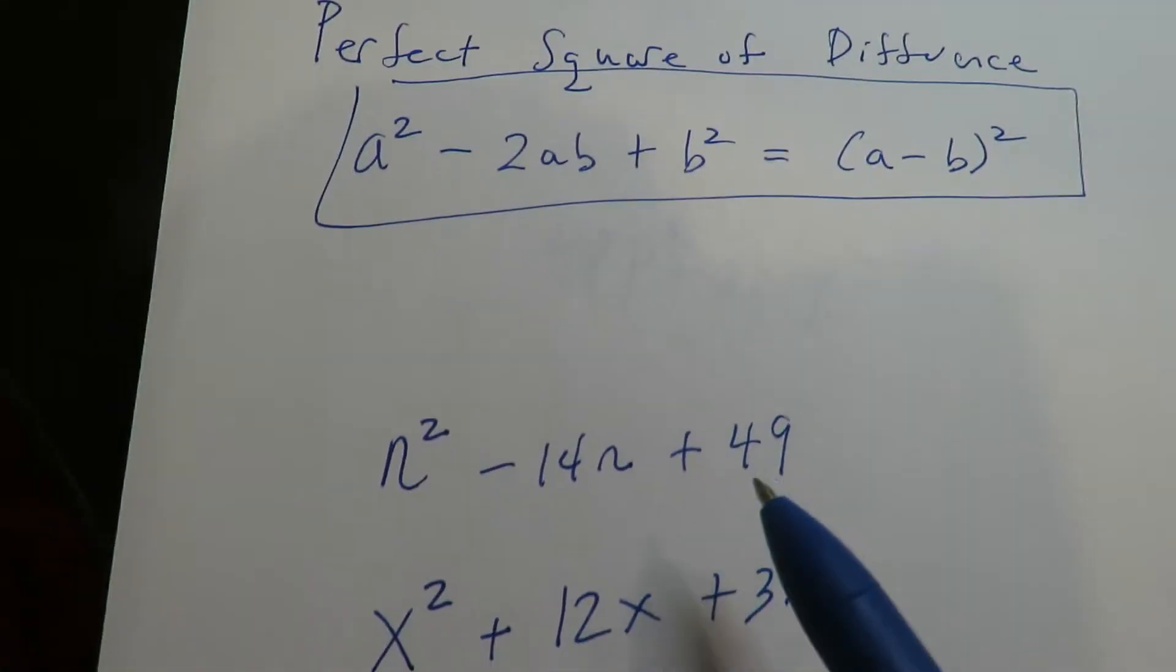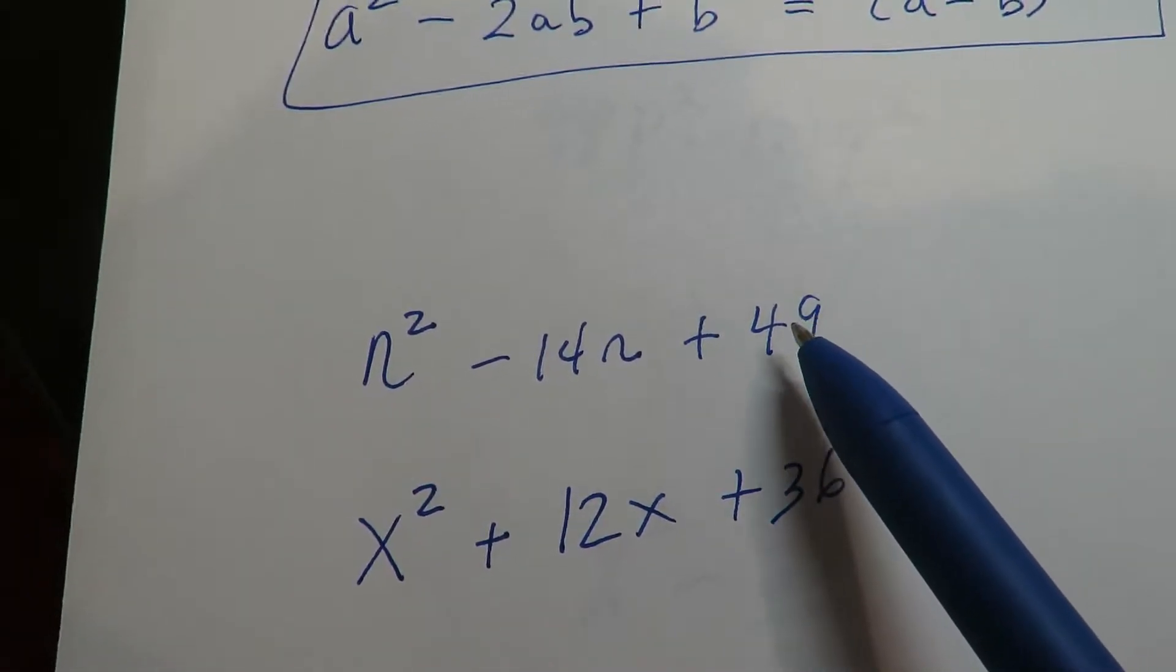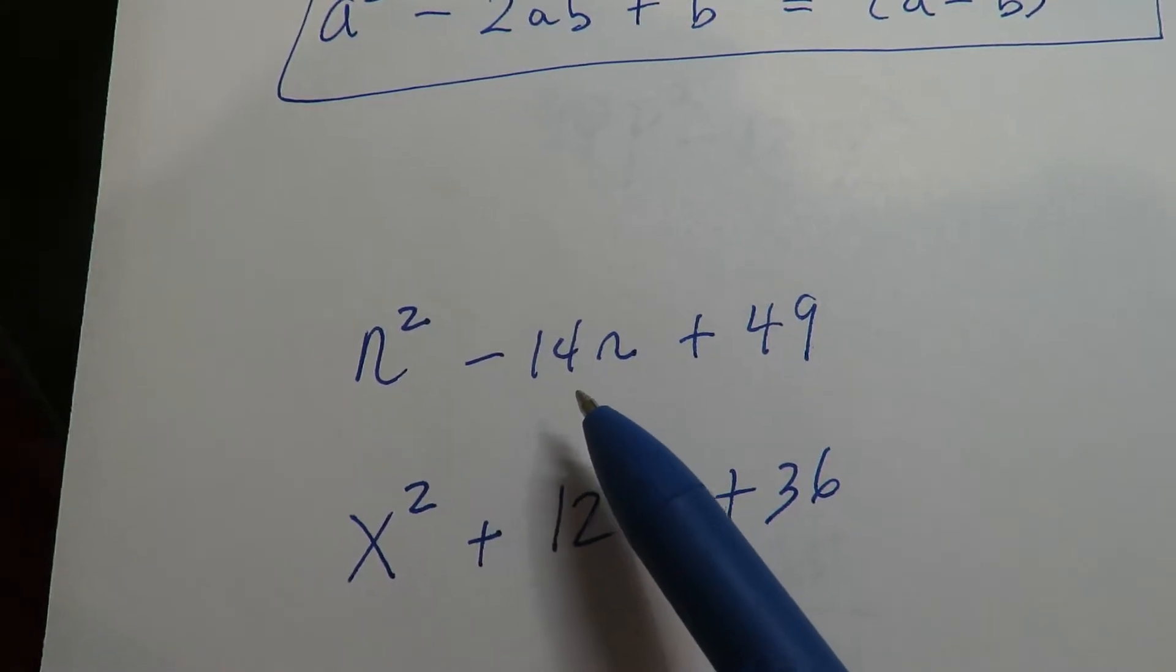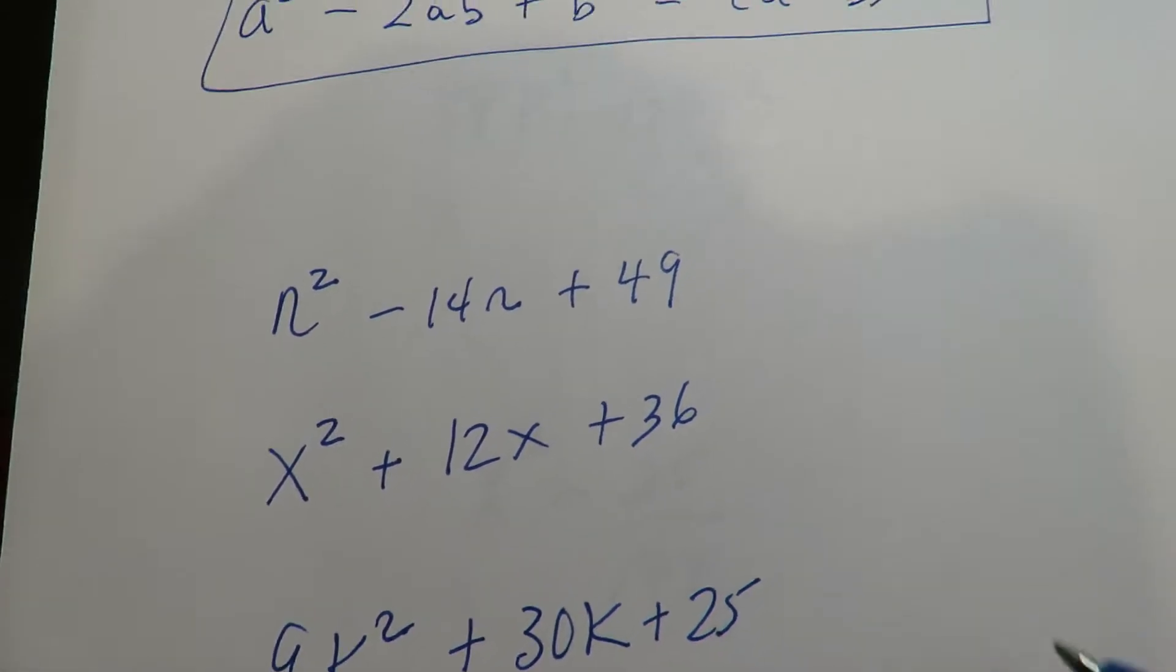So if you like the formulas, use them. If not, then just do it the way I was showing you earlier. So I need something that multiplies to 49, adds to negative 14n, that kind of idea. You can still use the techniques I was showing you earlier.